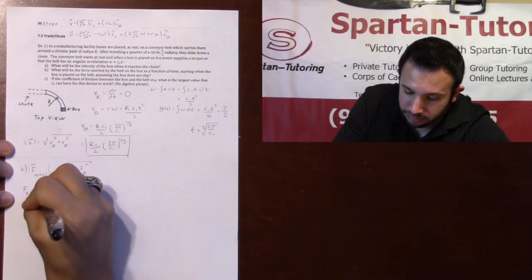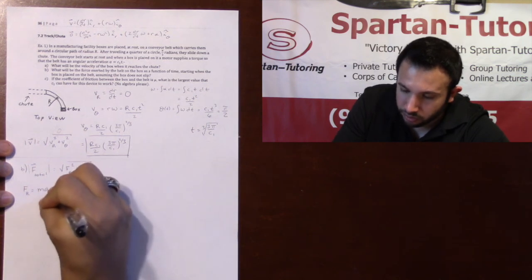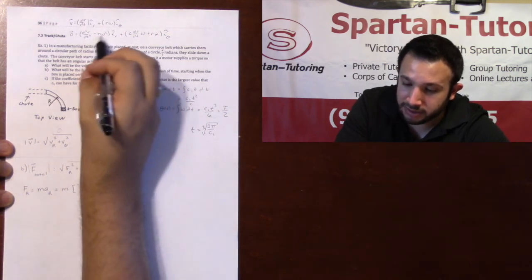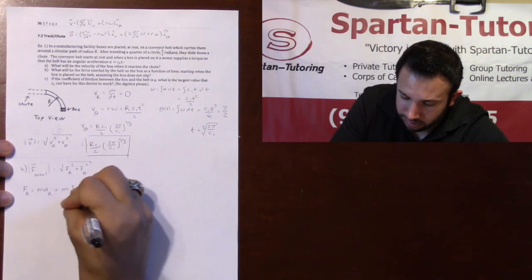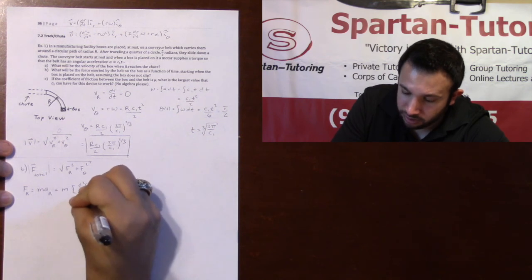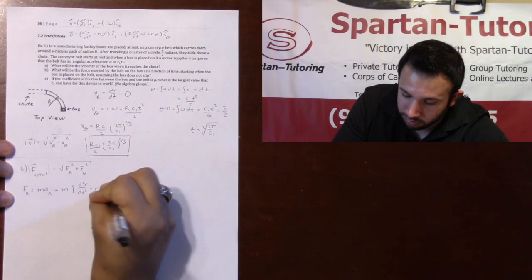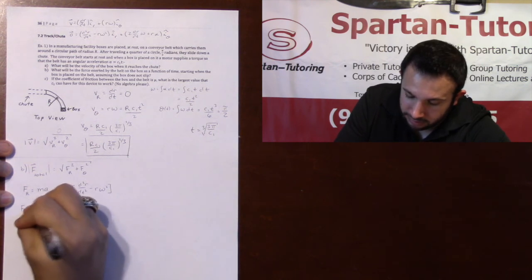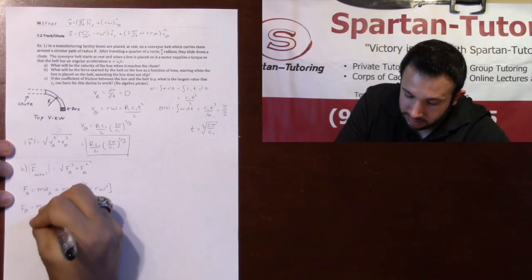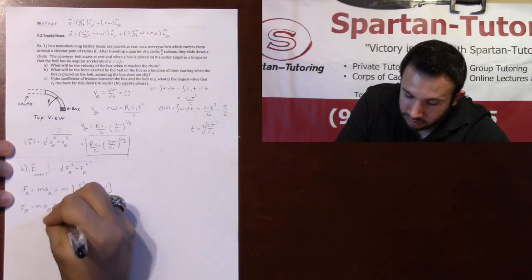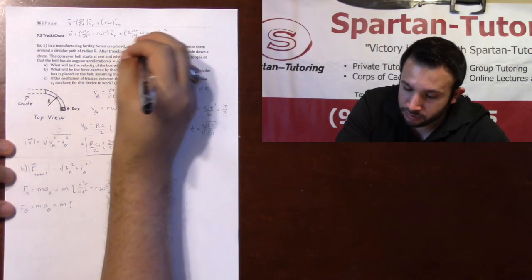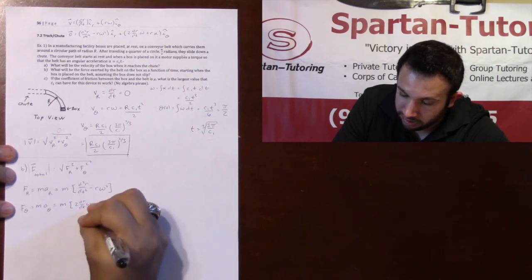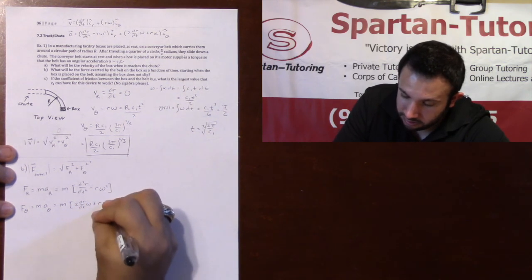fr equals m times ar, which is going to be m times d2r dt squared minus r omega squared. And my fθ is going to be m times aθ, which is m times 2 dr dt omega plus r alpha.